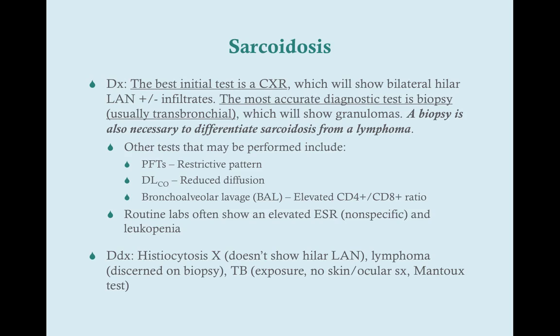The differential diagnosis is primarily three things. Histiocytosis X has some similar symptoms — constitutional symptoms and some pulmonary symptoms — but on chest x-ray it's going to be relatively normal without hilar lymphadenopathy. Lymphoma is going to be discerned on biopsy, which is why we get the biopsy. Tuberculosis is in the differential if the patient has had exposure to TB; generally patients with tuberculosis will never have skin or ocular symptoms, and we can differentiate TB by performing a simple PPD Mantoux test. On the USMLE, they'll either tell you the patient is an immigrant suggesting TB exposure, or they'll tell you the patient has skin and ocular symptoms pointing toward sarcoidosis.